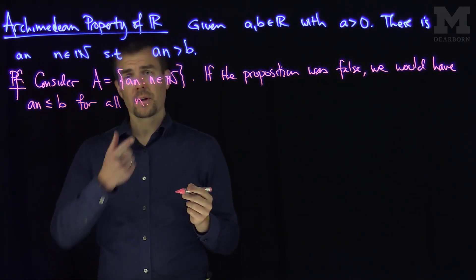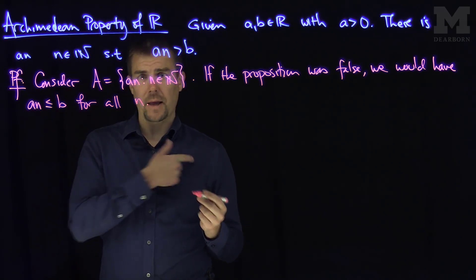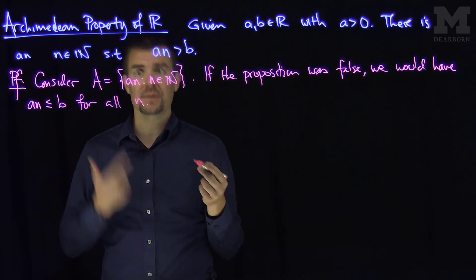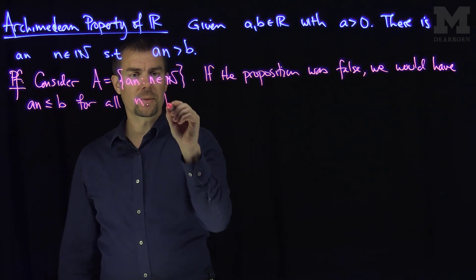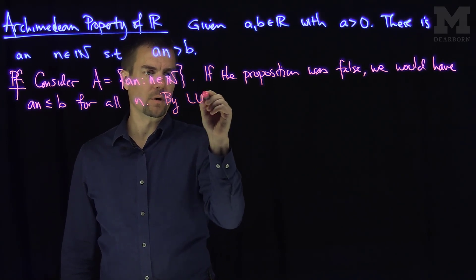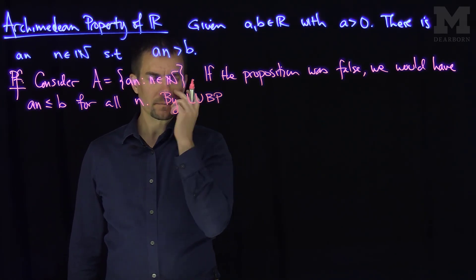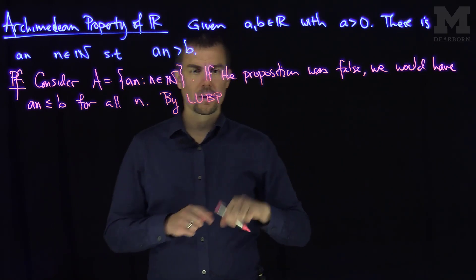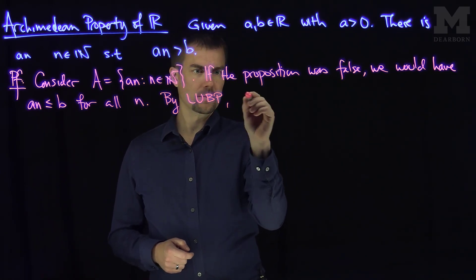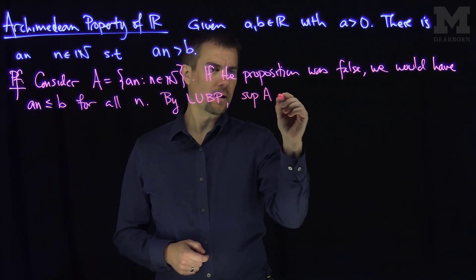This would say the set A is bounded and A is clearly not empty by taking n equals one. So by the least upper bound property, sup A exists.